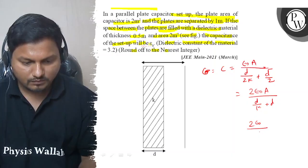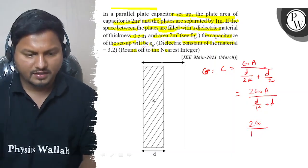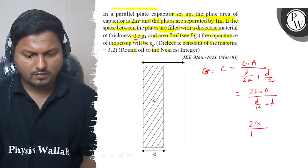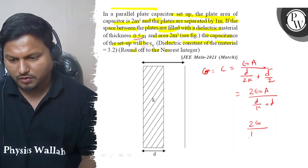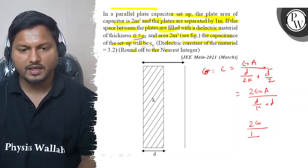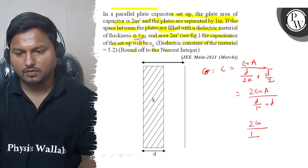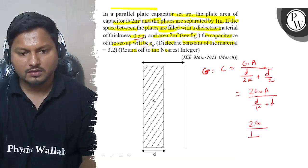That means d is 1 upon 3 by 2, we can say that d by k is 1 upon 3 by 2. Now d is 1 meter.